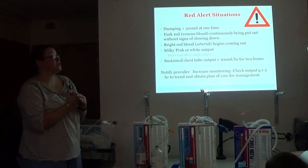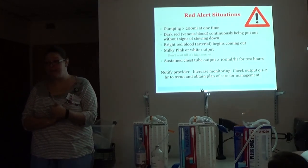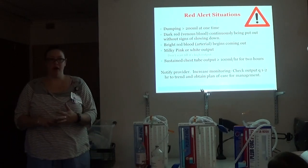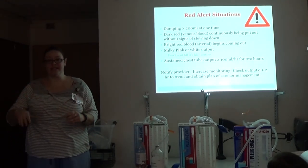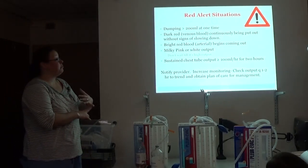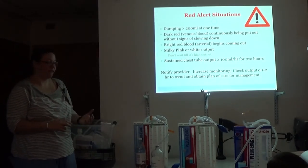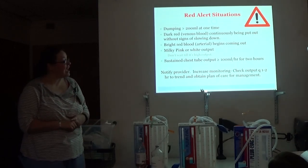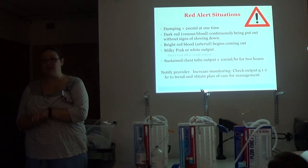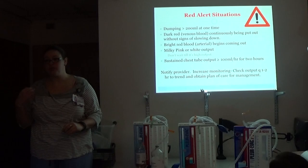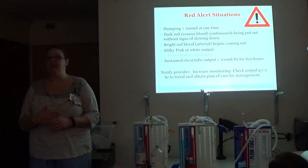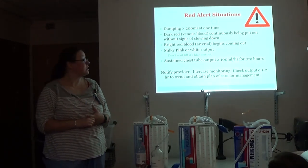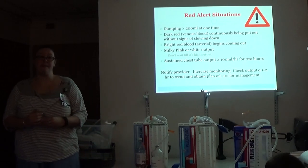So red alert situations, so these are situations you really want to take note of. If your patient dumps more than 200 mLs at a time, so if every time you stand your patient up, they suddenly put out a big old gush of fluid, you want to think, okay, have they been lying in bed all night and this has just been accumulating there, or is this happening all the time? Dark red blood that's continuously being put out without signs of slowing down, so your patient has a venous bleed. Obviously, bright red blood that's coming out is an arterial bleed. Milky pink or white output. Don't wait until it's high output. So milky pink or white output is indicative of what's called a chyle leak. So sometimes you can actually nick the lymphatic system, and so when your patient starts to take in a diet that has saturated fat in it, your lymphatic system will start to drain, and you'll get this milky pink drainage that's high in output, so between 500 and 1,000 mLs in 24 hours. And then if you're putting out more than or equal to 100 mLs an hour for two hours.